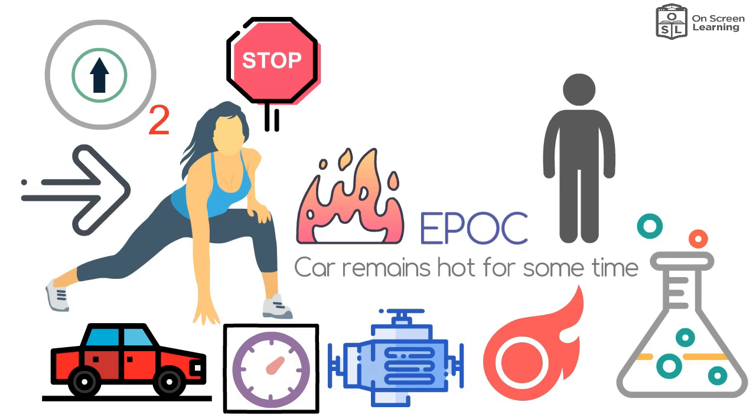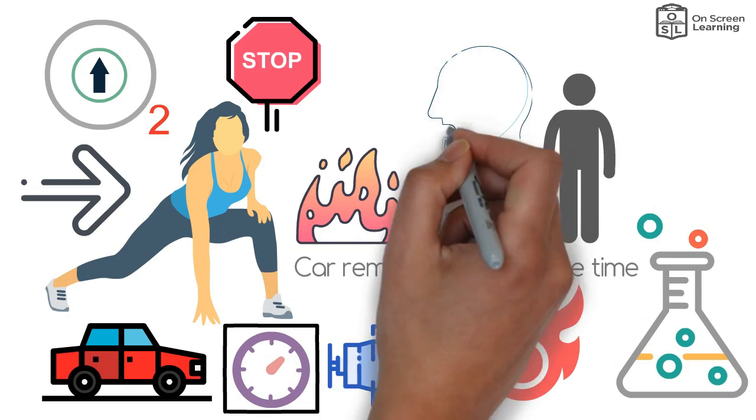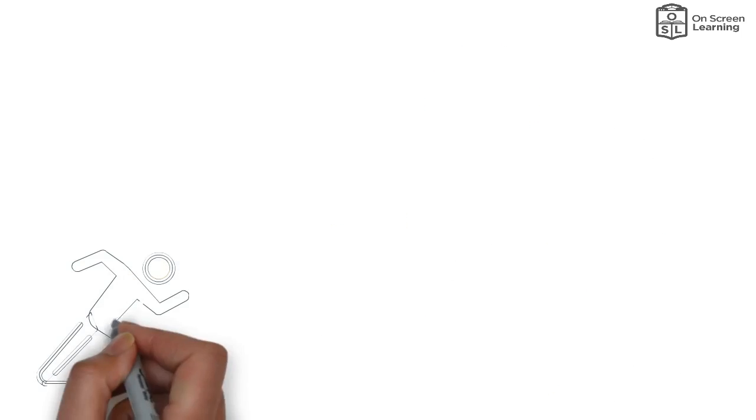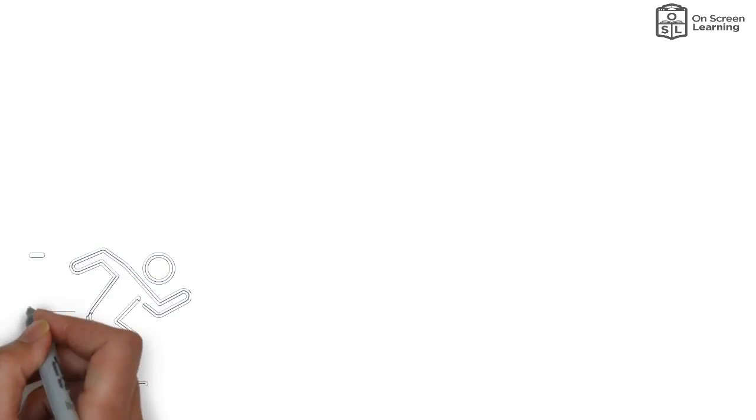When you go for a stroll and then stop, your breathing rate remains at a gentle rate while you have stopped. Now, think about what would happen if you ran as hard as you can for 60 seconds then stop.